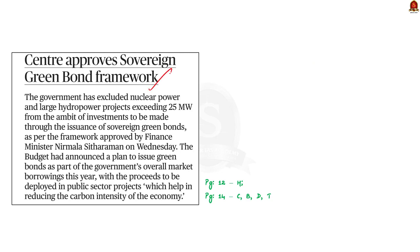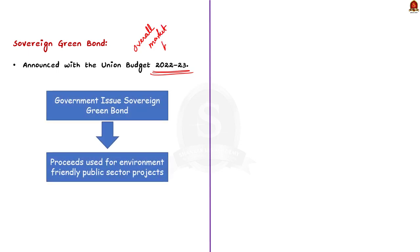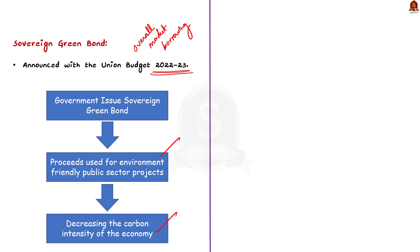The next news article reports about the exclusion of nuclear power and large hydropower projects exceeding 25 megawatts from the ambit of sovereign green bonds. The issuance of sovereign green bonds was announced in Union Budget 2022-23 as part of the government's overall market borrowings. These bonds will be issued by the government and the proceeds will be used in environment-friendly public sector projects, helping to decrease the carbon intensity of the economy.